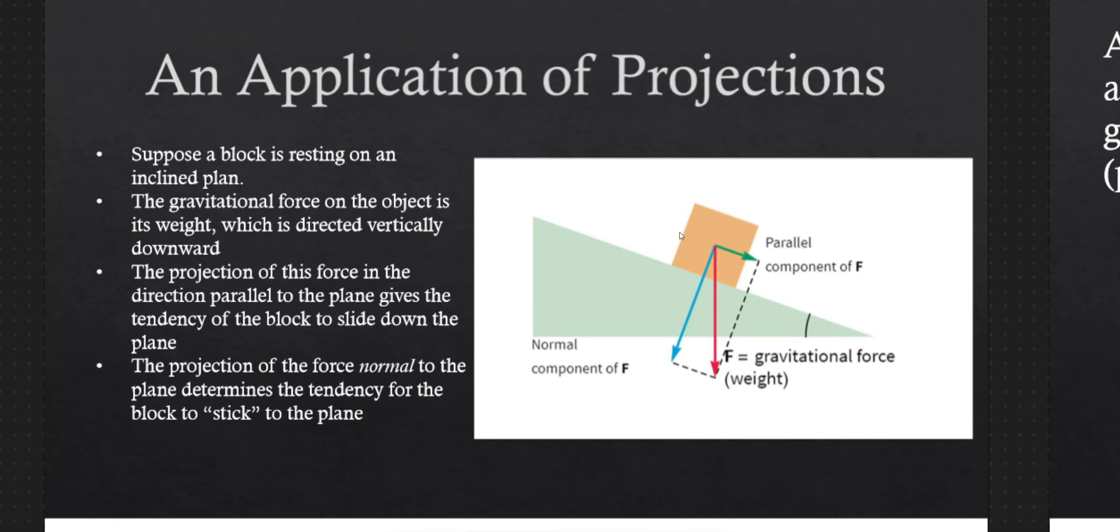is going to be the coefficient of friction times the amount of force that's going into the plane. So it's going to be coming back this way, and we get a hold of that by knowing how much of the gravitational force goes into the plane.